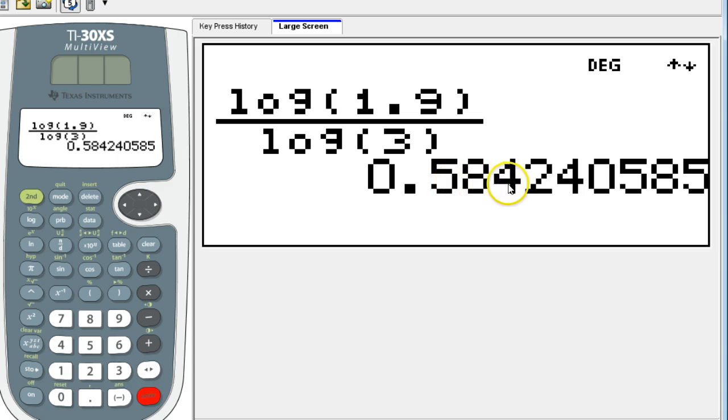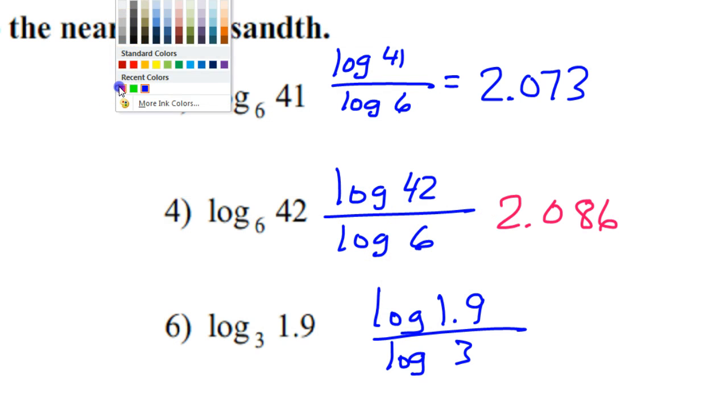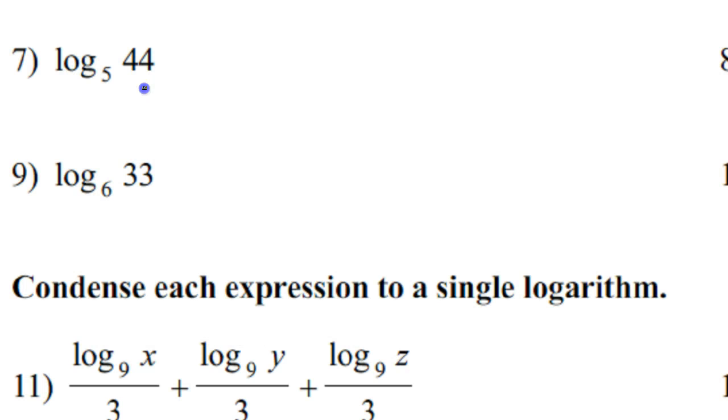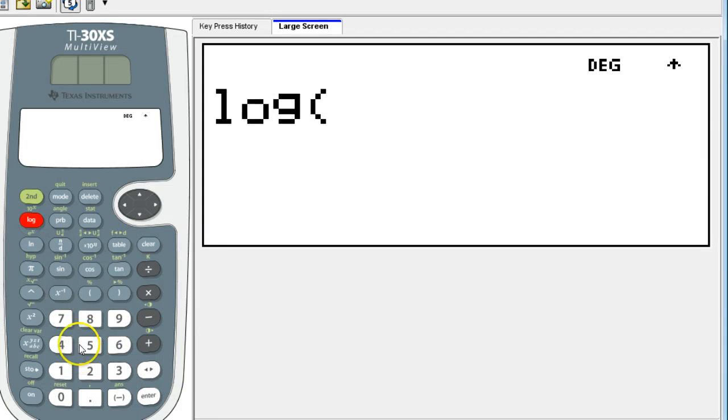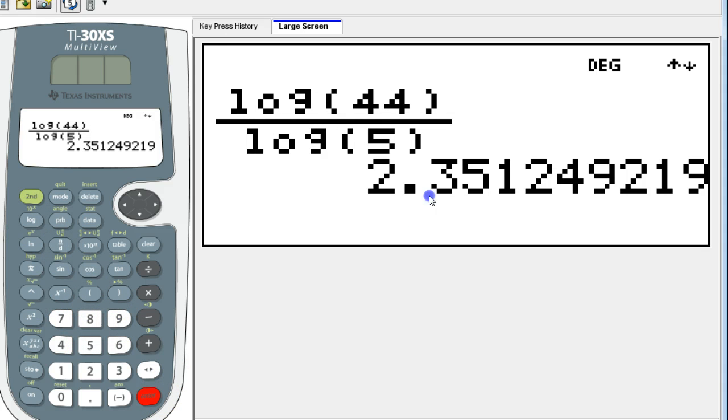All right number seven that's going to be log 44 over log 5. 2.351.